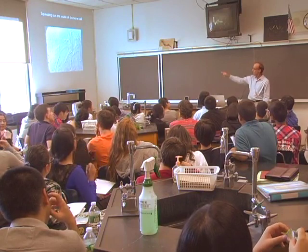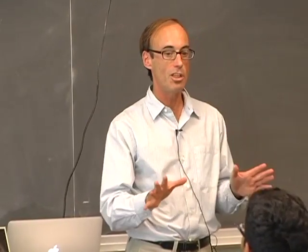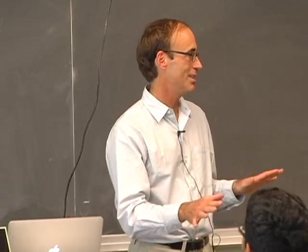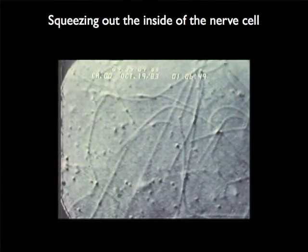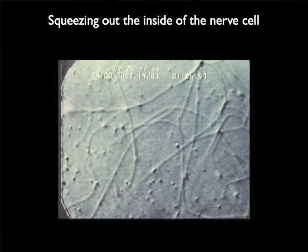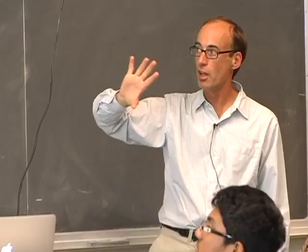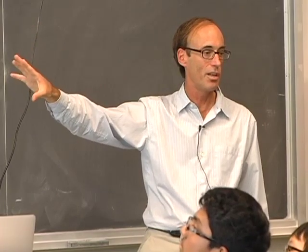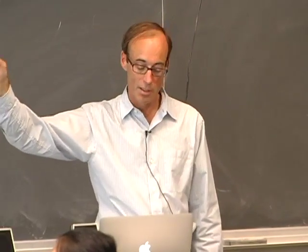We put this squeezed-out material on a glass slide, mushed it up with some buffer and a pipette tip, then watched it under the microscope. Now we could see things we couldn't see before — something that looked like roadways, some really discrete structures. This alone got rid of a lot of other theories about how the transport system worked. There were clear roadways. Using electron microscopy we discovered those roadways were microtubules, but we still didn't know what the motor was.